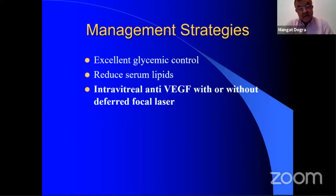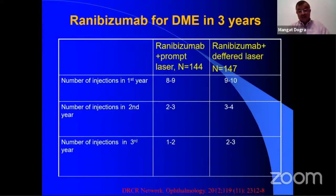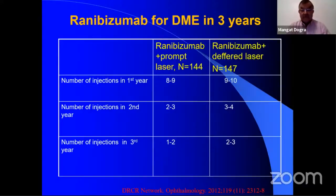The primary treatment here is intravitreal anti-VEGF with or without deferred focal laser. I'll come to it later because we have a lot of difficulties treating our patients, who come from all different strata of society. According to what the DRCR network has shown, in the first year you may need eight to ten injections, next year maybe three to four, and in the third year it may go down to one to three. But many of our patients won't be able to maintain that schedule.